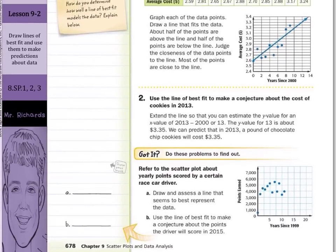Next, refer to the scatter plot about yearly points scored by a certain race car driver. Draw and assess a line that seems to best represent the data. Well how many data points do I have? 1, 2, 3, 4, 5, 6, 7, 8, 9, 10, 11.